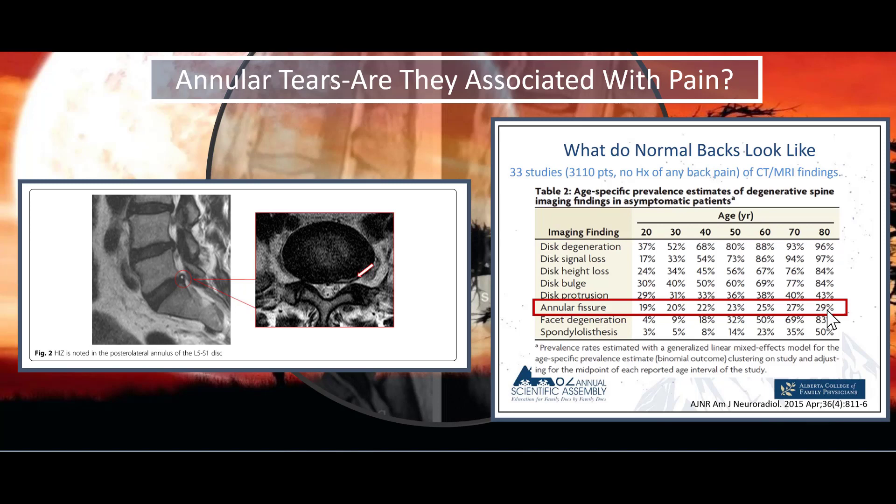Looking through that chart, annular tears aren't necessarily as common as other findings that would indicate degeneration of the disc. So when I look at this, especially in a 20-year-old, if they have an annular tear, I am not conclusively sure it would be the cause of their back pain. But given that they are much less common in younger age groups than older, I would place a little more emphasis on it as a potential cause. That doesn't mean it wouldn't heal with conservative care — that's a completely different discussion.